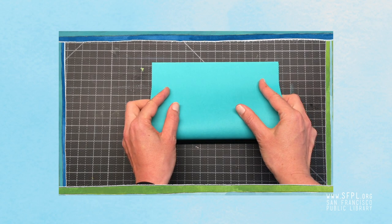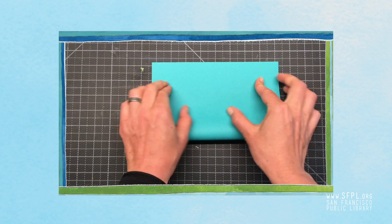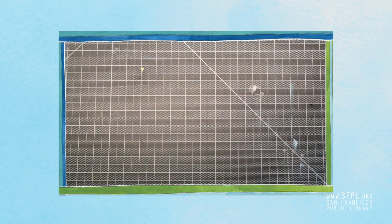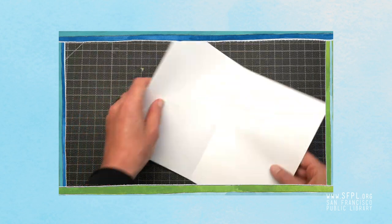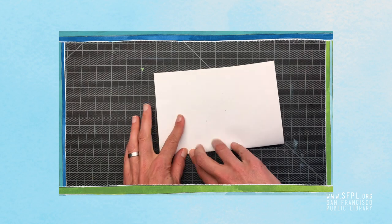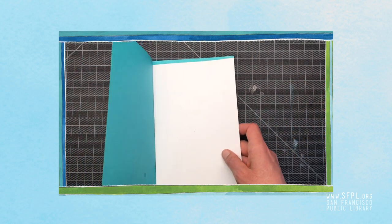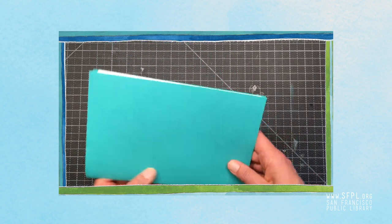Fold your cover paper in half, and fold your interior paper in half. And then just put them together and staple them along the folded edge.